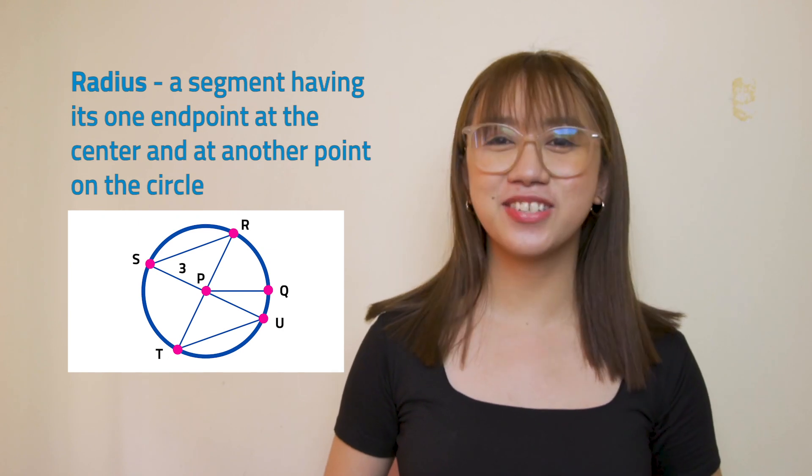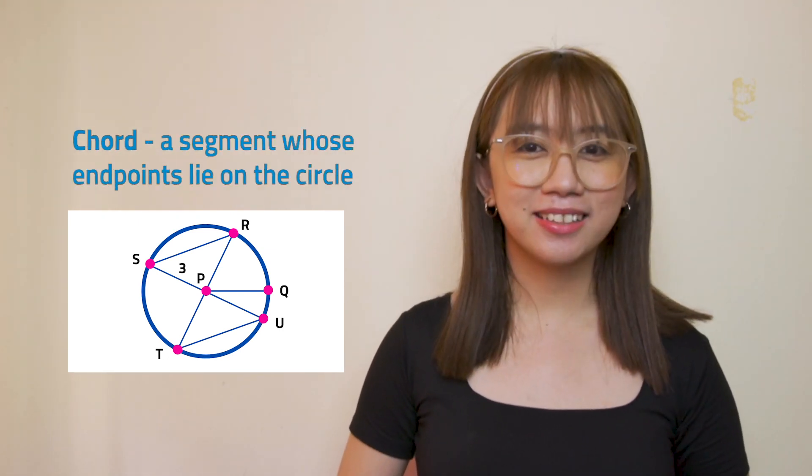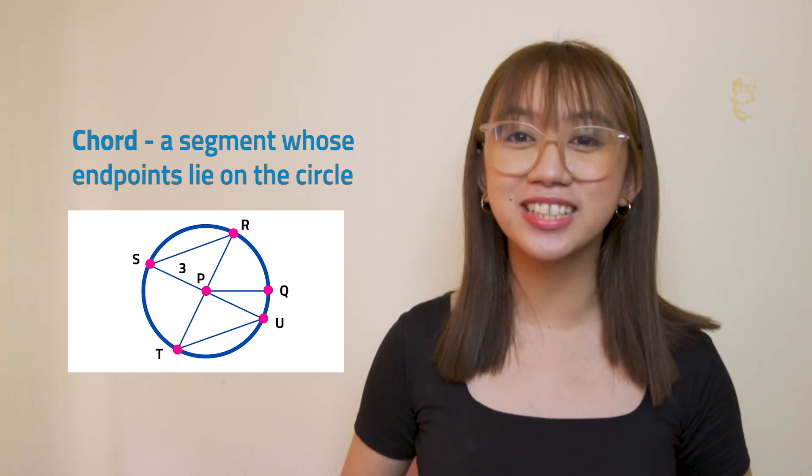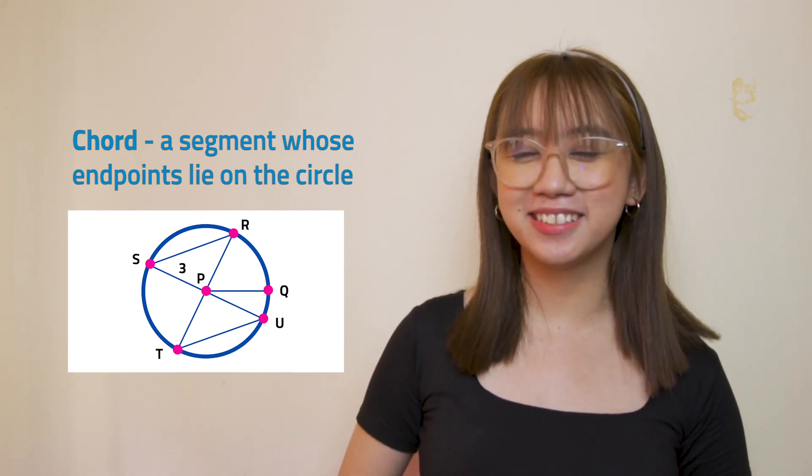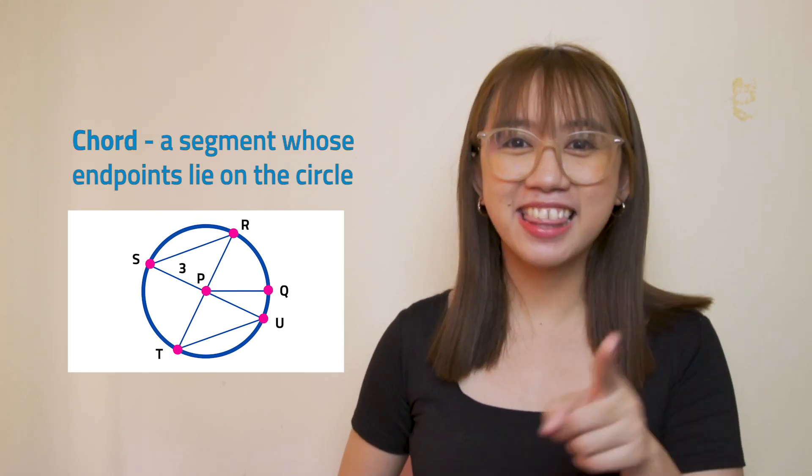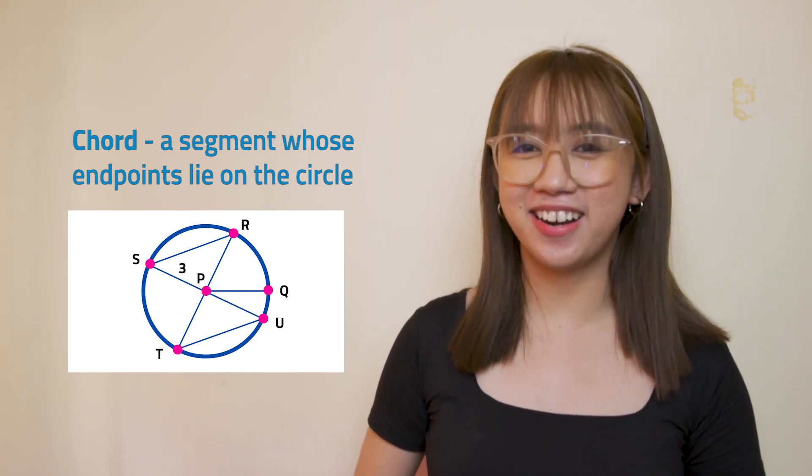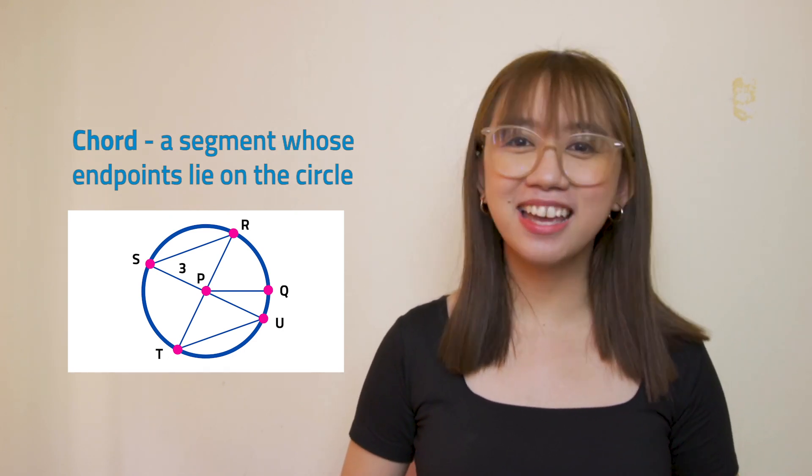Second is the chord. The chord is a segment whose endpoints lie on the circle. Can you find the chords in circle T? That's correct! The chords are segments RS, RT, SU, and TU.